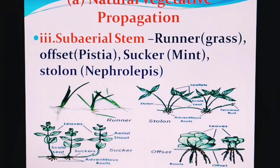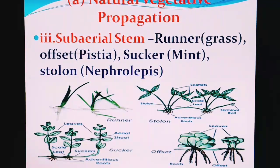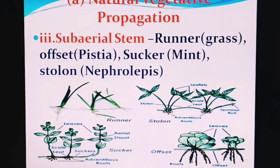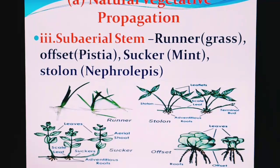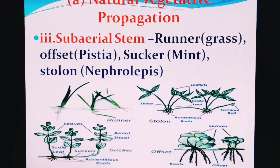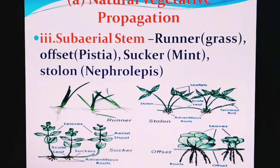Another example is the sub-aerial stem. For example, grasses have a runner. One plant — a grass — is attached to another. If you go to a garden and pull a plant, you will find it connected to a mother plant; that connection is the runner. The runner is comparatively thin and elongated. Similarly, in aquatic plants there is an offset — examples include Pistia and Eichhornia. The offset is another natural vegetative propagatory part of the sub-aerial stem.